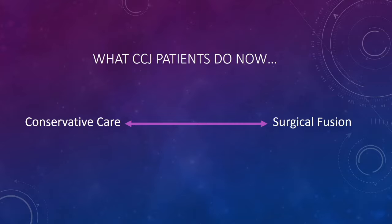Let's now switch gears into CCJ, which is really the focus of what we're talking about today. One of the problems in CCJ therapy right now is that you've got conservative care, which is quite good — atlas orthogonal work, curve restoration, different types of chiropractic, a few rehab techniques. And then on the other end of that spectrum you've got surgical fusion, this incredibly aggressive, high risk procedure. There's very little in between those two extremes.